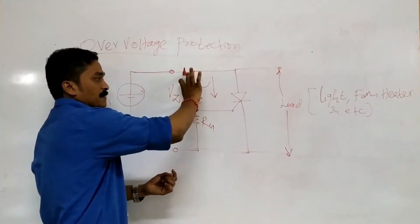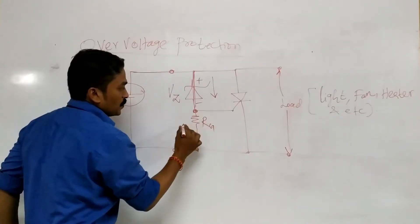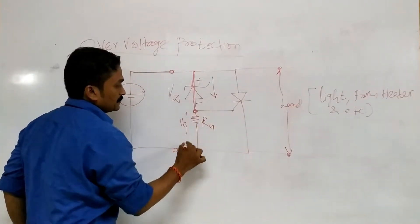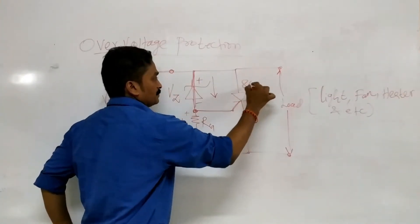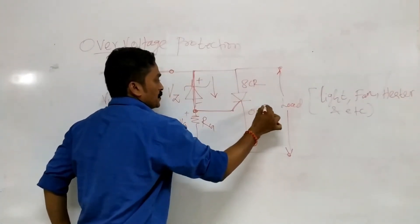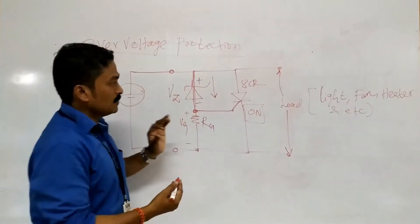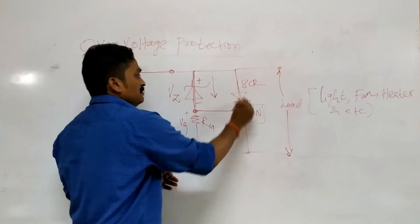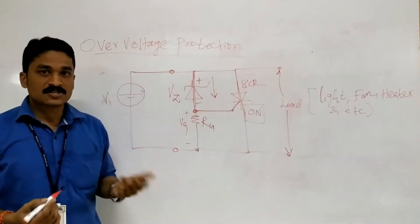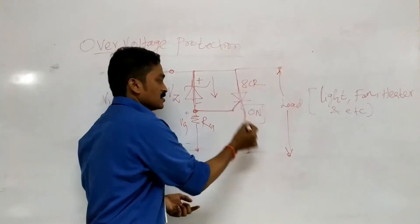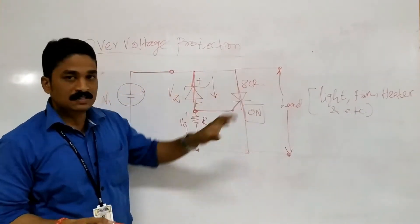The Zener is in reverse bias condition. This causes a voltage drop across the gate resistor Rg, which provides a trigger signal to the SCR, switching it on. Once the SCR is triggered and switches on, it acts as a short circuit. If you measure the voltage drop across the SCR, it will be at a minimum.